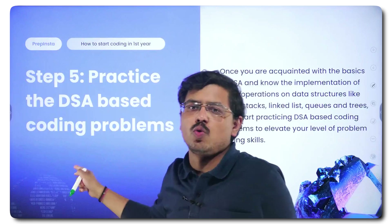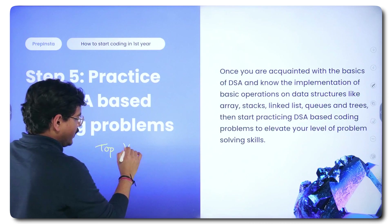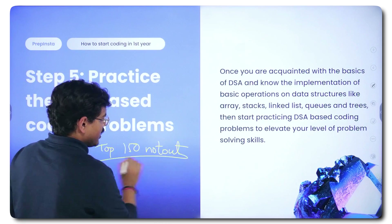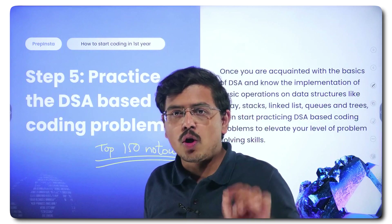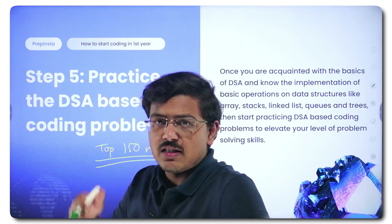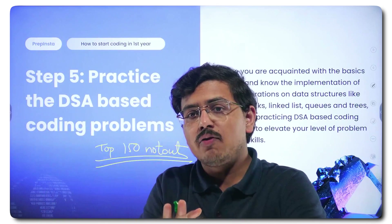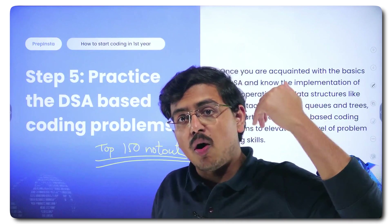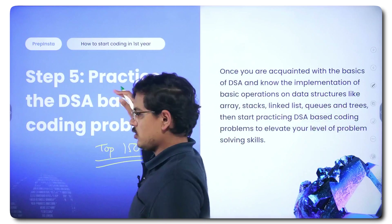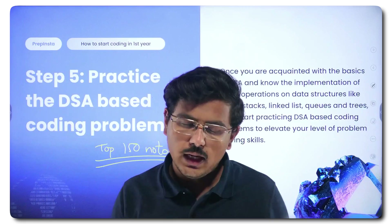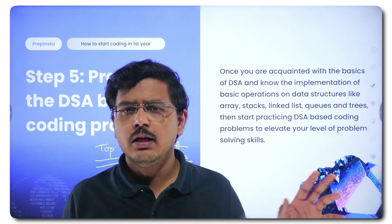For practicing DSA, I have specifically made a list called the Top 150 Not Out questions. This list is available for free on PrepInsta.com — just search 'Top 150 Not Out PrepInsta' and you'll find those 150 problems. But do not start them without preparing the DSA basics first. They are divided topic-wise, so study arrays fully, then go solve the array problems. Initially, solve easy and medium problems — start with easy, then in the second iteration tackle medium ones.